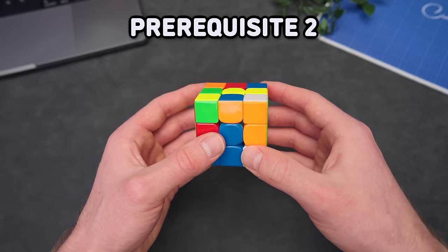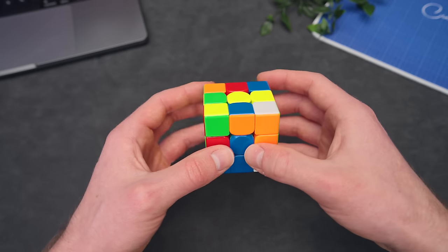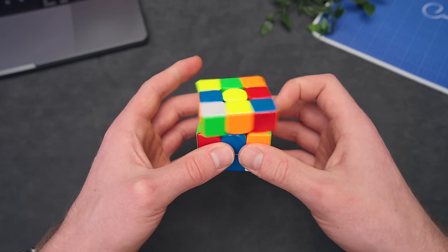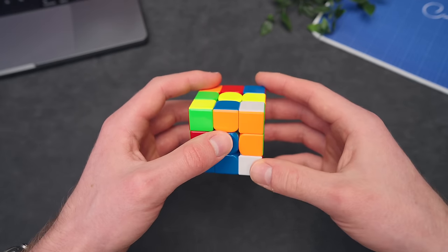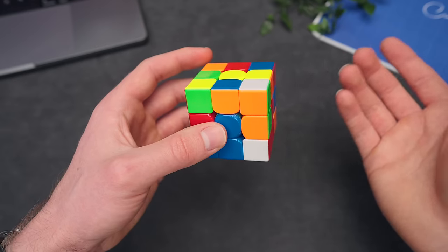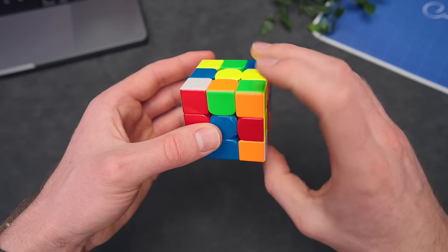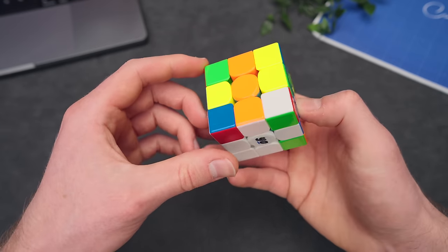Secondly, you need to know some basic finger tricks, which means wrist turns for R or L moves, index finger turns for the U layer, thumb for F moves, and ring finger for D moves. But most importantly, R U turns like this and L U turns like that.